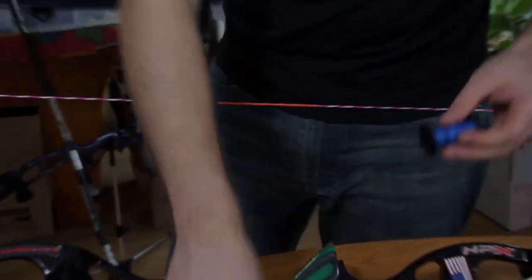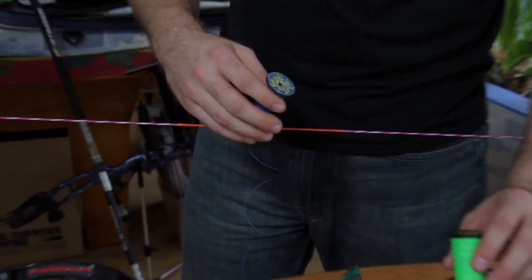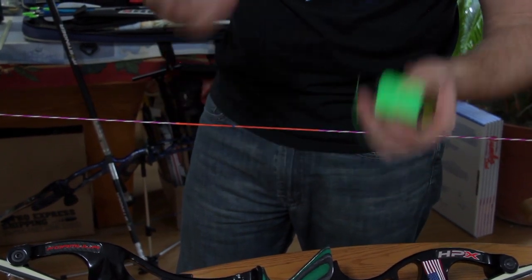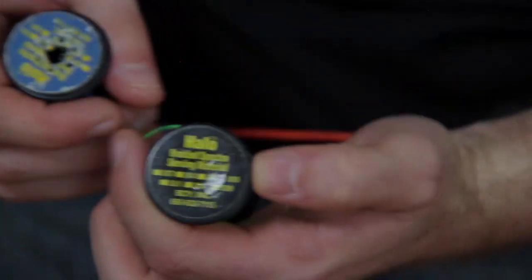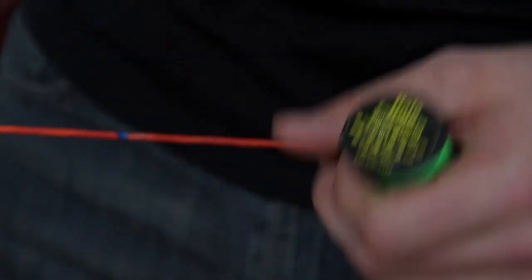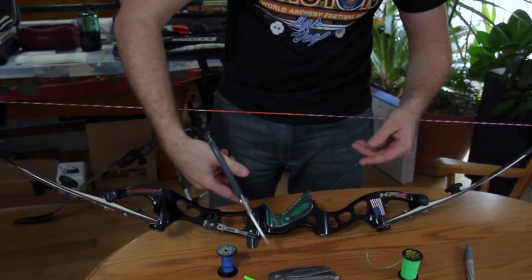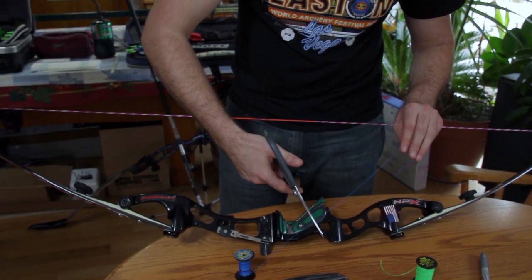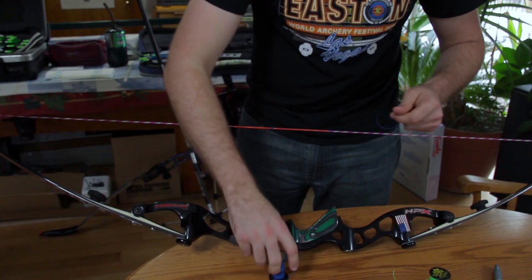And proceed to cut a piece of string. Here I am using the Halos serve from BCY. This is the .014. I recommend the .014. I wouldn't go higher than .019 because it gets too thick and you end up getting a lot of contact between the knocking point and your finger tab. So, I prefer the smaller serving. So we are going to cut that with the scissors. You probably want to give yourself a good 6 to 8 inches just because you can then get some pull to make it nice and tight. So we cut that.